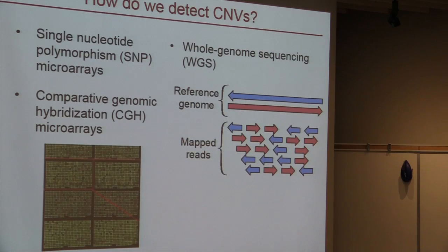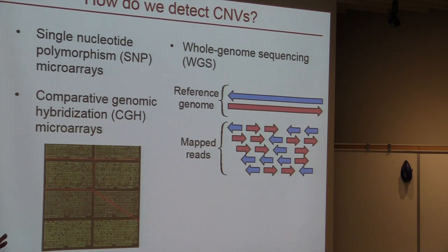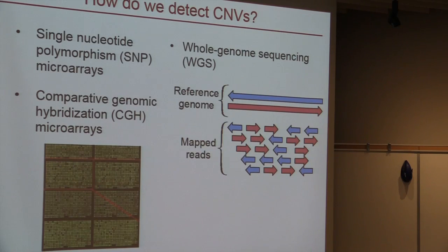It's important to be able to detect copy number variants, or CNVs. For the past quite a few years, the standard method was microarrays — both SNP microarrays and comparative genomic hybridization microarrays can detect copy number variants. But more recently, with the cost of whole genome sequencing going down, it's becoming more attractive as an option for detecting CNVs, because whole genome sequencing has a number of advantages over microarrays.